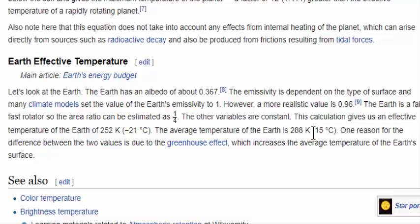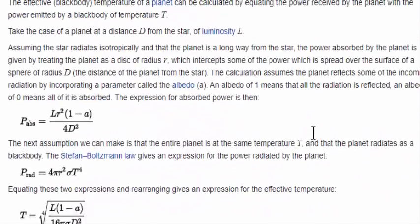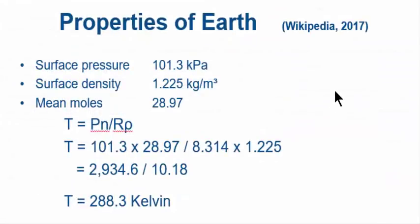Okay, let's check them. Wiki, effective temperature of Earth. Where is it? There it is. The average temperature of the Earth is 288 Kelvin. That's not bad, is it? It's pretty well spot on.